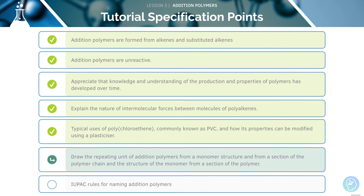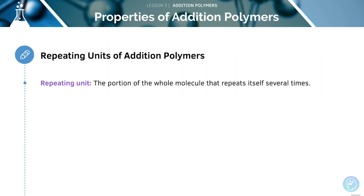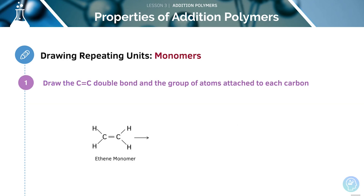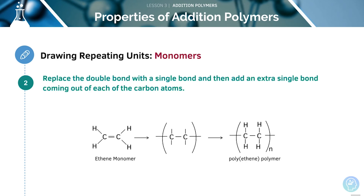We will now look at how to draw the repeating unit of addition polymers. A repeating unit is a portion of the whole molecule that repeats itself several times, and a polymer consists of lots of repeating units joined together. The repeating unit has a similar structure to the monomer, except it has the double bond opened up. First, draw the carbon-carbon double bond and the group of atoms attached to each carbon. Next, replace the double bond with a single bond and add an extra single bond coming out of each of the carbon atoms.